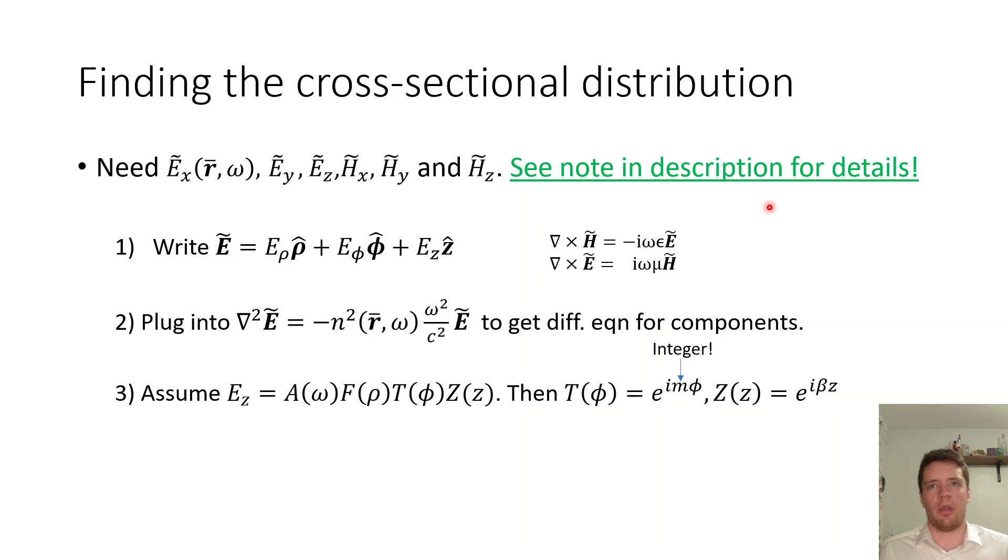But the basic rundown here is that we need the electric field components for both the x and the y and z components and also the same for the magnetic field which solve the Helmholtz equation so our strategy is first to write the electric field in polar coordinates because we have a cylindrical fiber so we have a radial component, an angular component and a z component then we plug this into the Helmholtz equation.